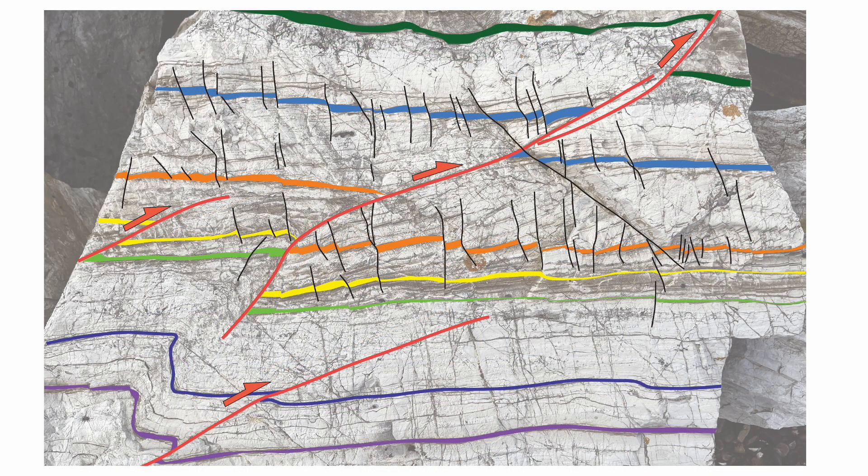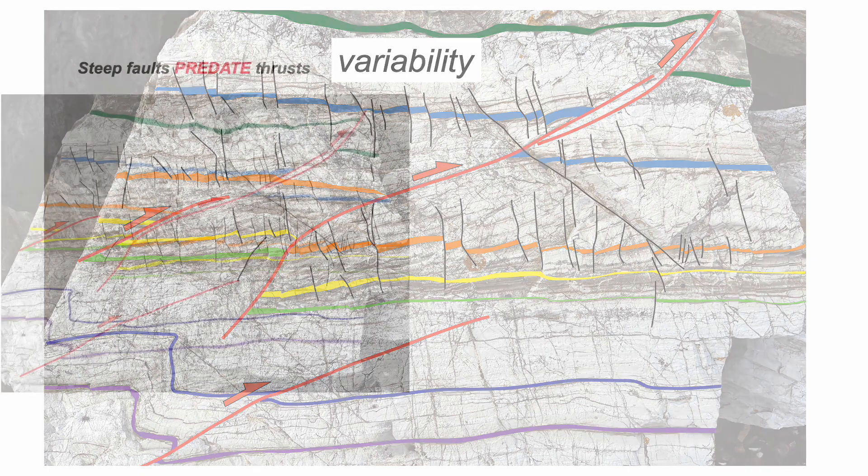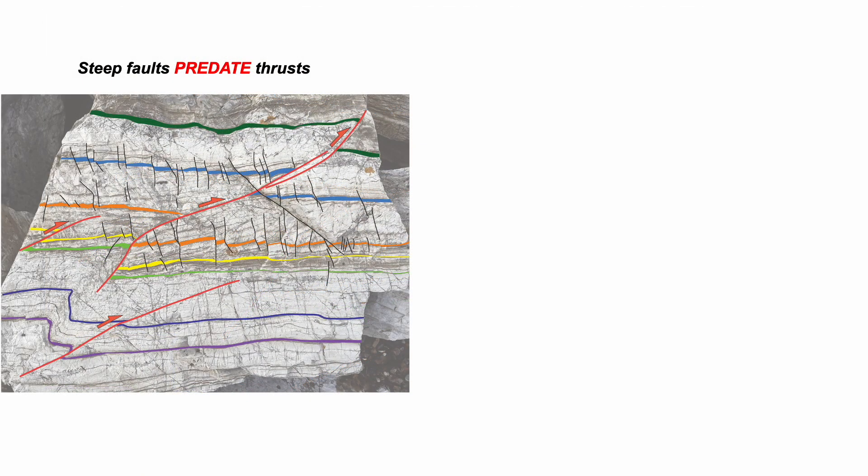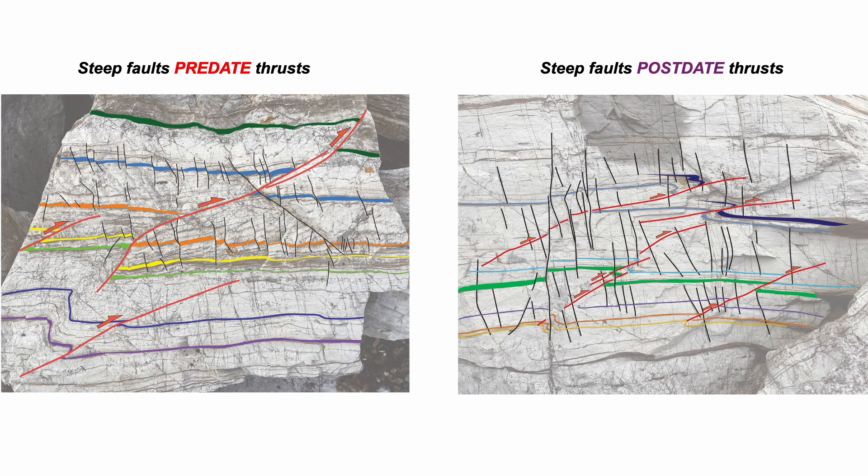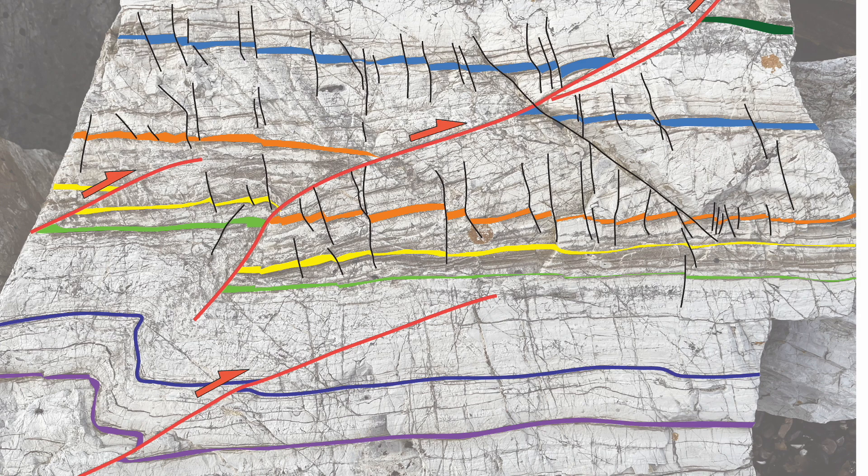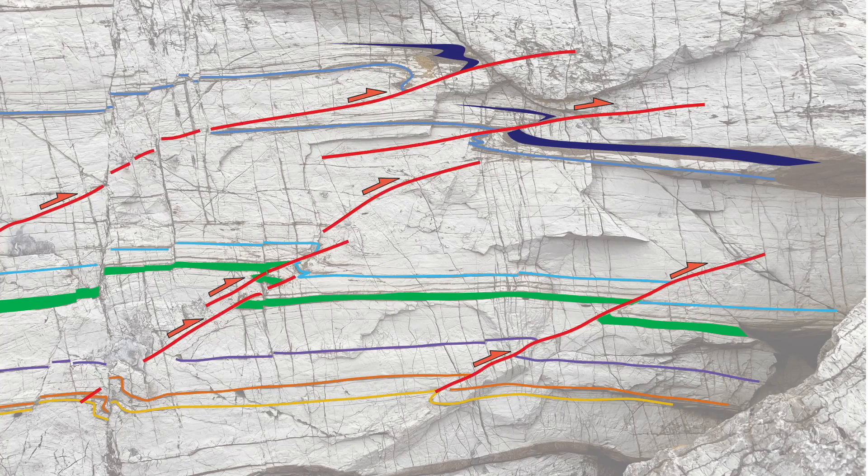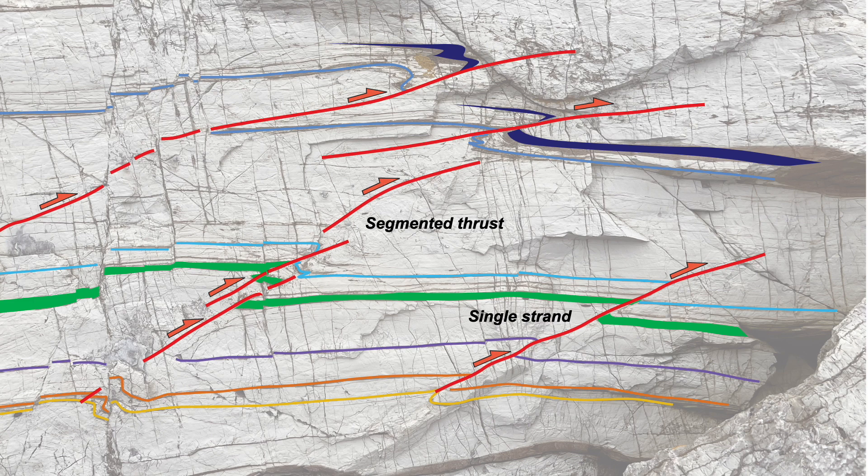Drawing together the lessons from the rocks, the watchword is variability. So in this second example, the thrusts cut the steep faults. But the opposite was found in the first example. So different histories of the relative timing of the different types of faults. And the thrusts themselves also show variability. In places passing back into folds. And the patterns of fault localization can vary from thrust to thrust, even in the same rocks.